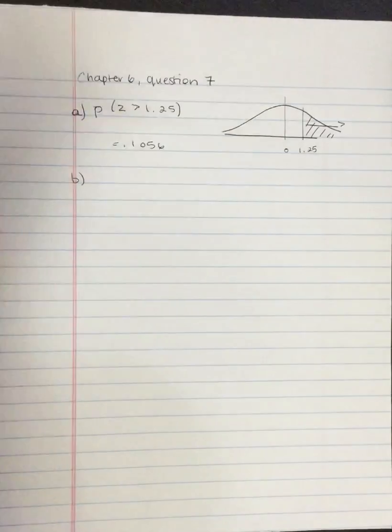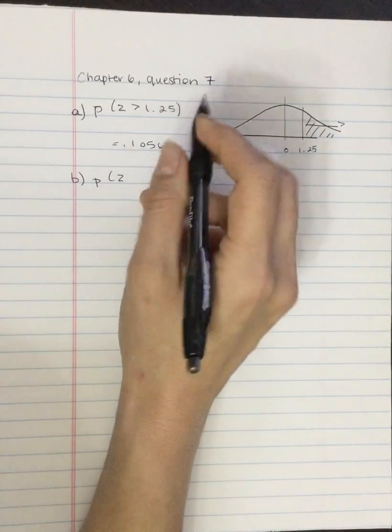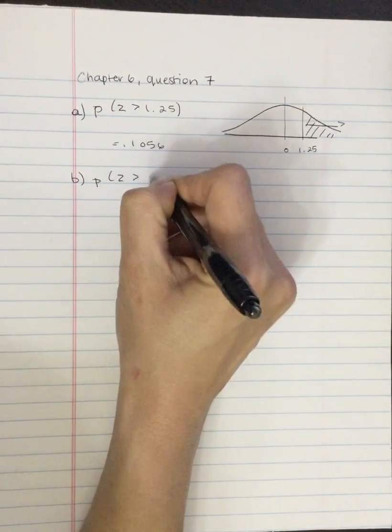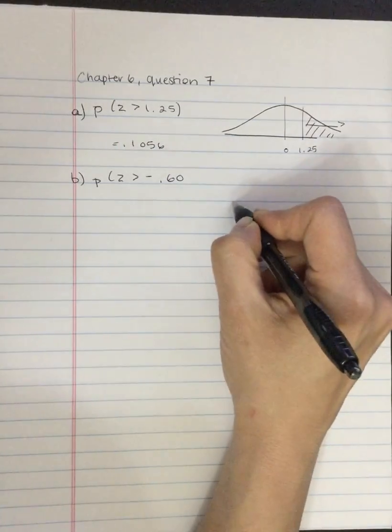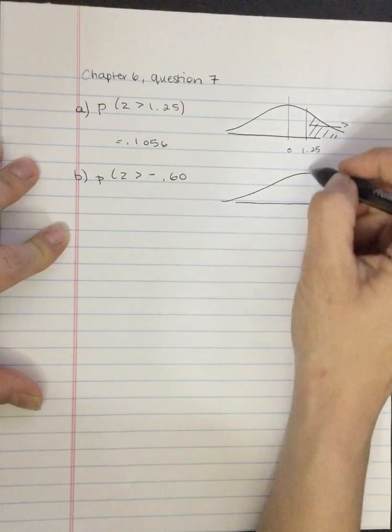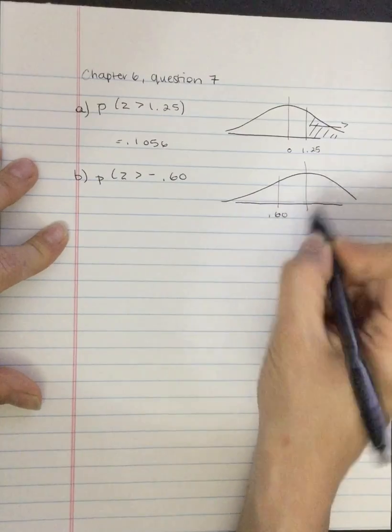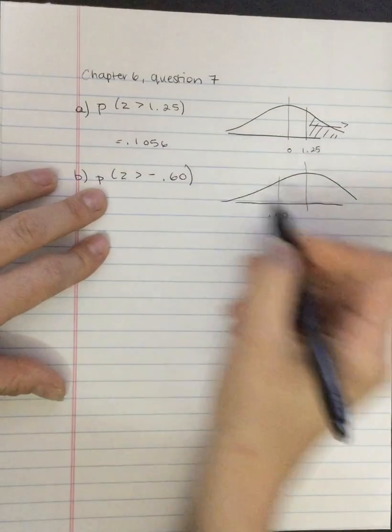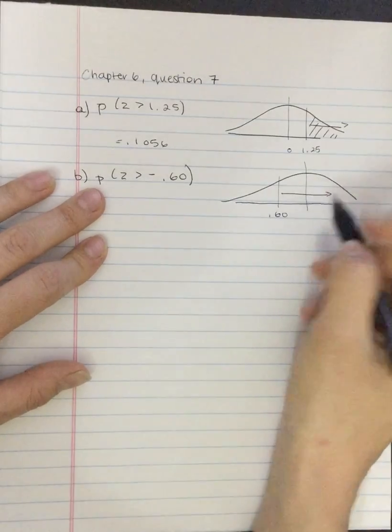B, the probability of Z greater than negative 0.60. So again, let's draw it out. Now it's a negative, so it's over here, 0.60. And we want, again, greater. So we want the body in this case.